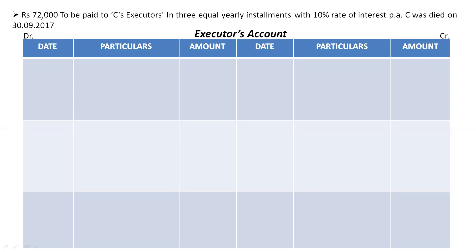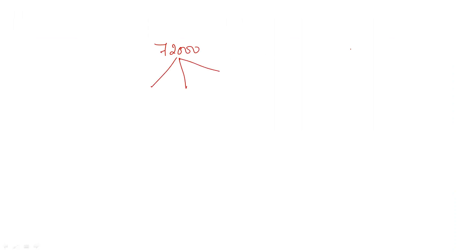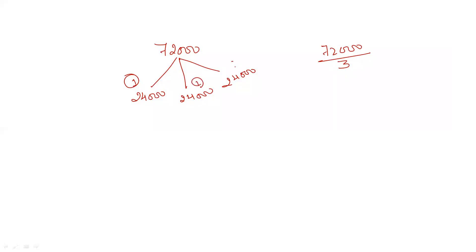We have to pay — the firm — 72,000 rupees to C's executors, divided into three equal yearly installments. So 72,000 divided by three gives 24,000 rupees as one installment. In the first year we pay 24,000, in the second year 24,000, and the final installment of 24,000 in the third year. Along with the principal amount, we also have to pay interest.